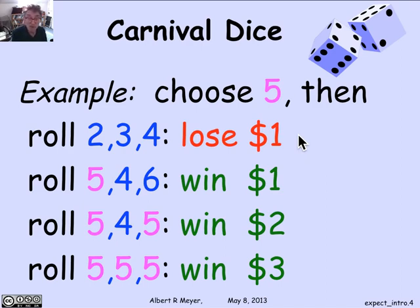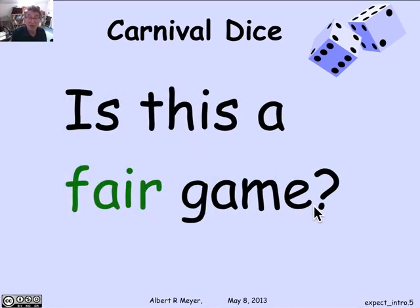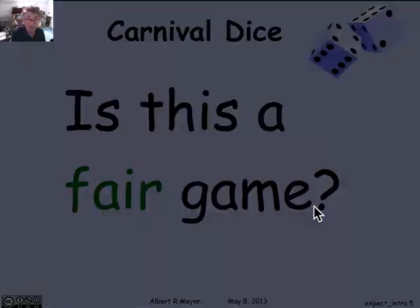Real Carnival Dice is often played where you either win or lose $1 depending on whether there's any match at all. But we're playing a more generous game where if you double match, you get $2, and if you triple match, you get $3. The basic question about this is: is this a fair game? Is this worth playing? And how can we think about that? We're going to think about it probabilistically.